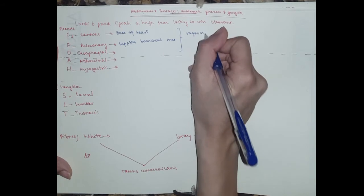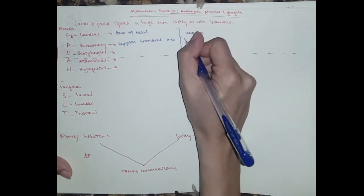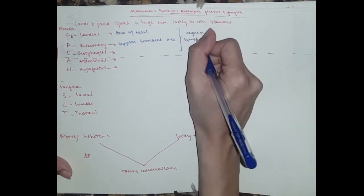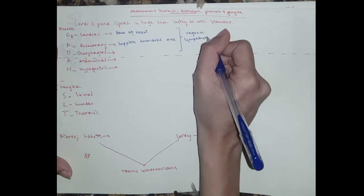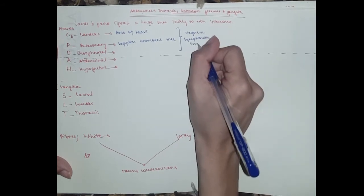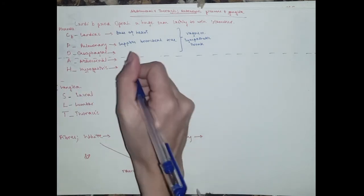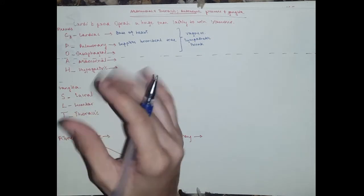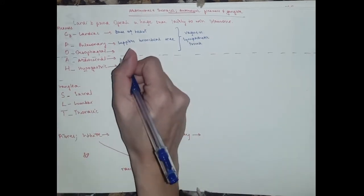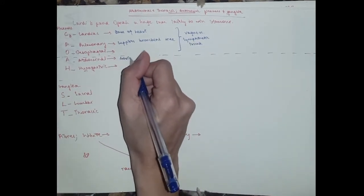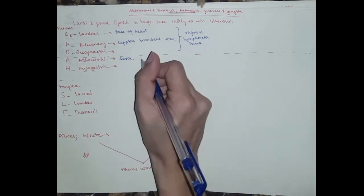So what you need to know is common about all three is that the parasympathetic division comes from the vagus nerve of course, and the sympathetic supply comes from the sympathetic trunk. All right, next we move on to the abdominal one.